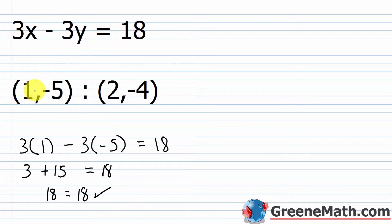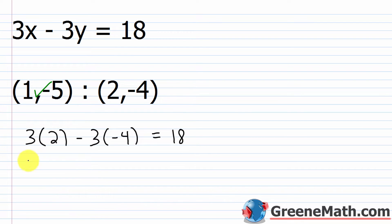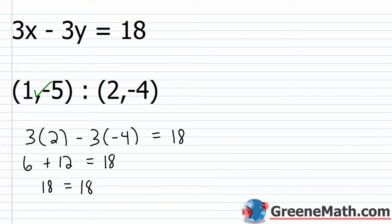So we can say that the ordered pair (1, -5) is a solution for this equation, because when I plug in 1 for x and -5 for y, I get a true statement. Let's do the same with (2, -4). We'd have 3 times 2 minus 3 times negative 4 equals 18. So 6 plus 12 equals 18 — and it does. So (2, -4) is also a solution for 3x minus 3y equals 18.